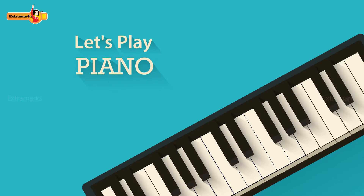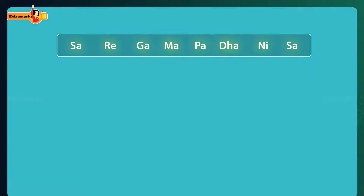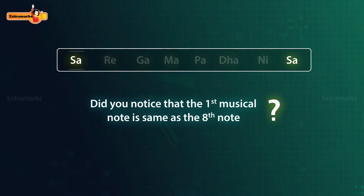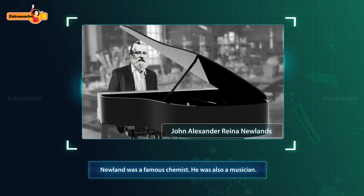Let's play piano. Did you notice that the first musical note is same as the eighth note? John Alexander Reina Newlands, popularly known as Newland, was a famous chemist who was also a musician. He used this concept of repetition while classifying the elements.